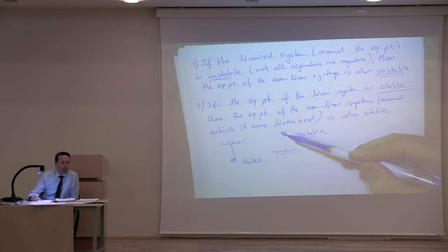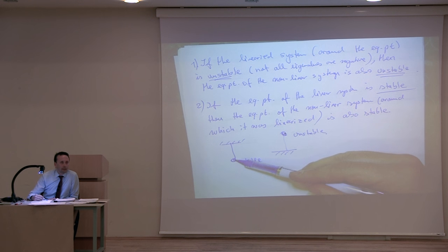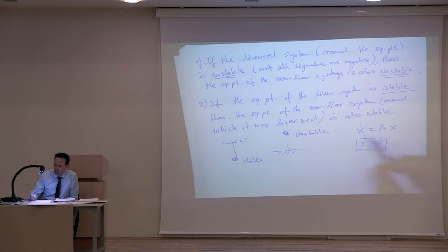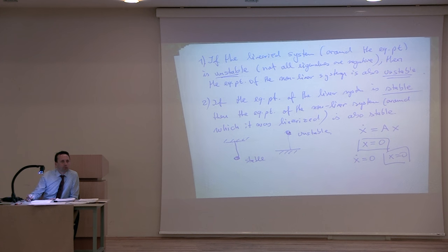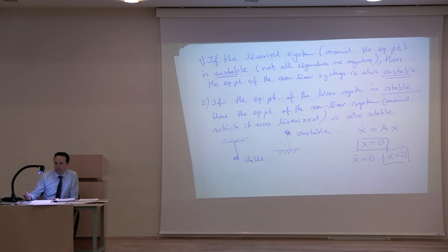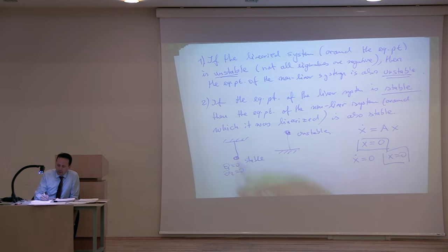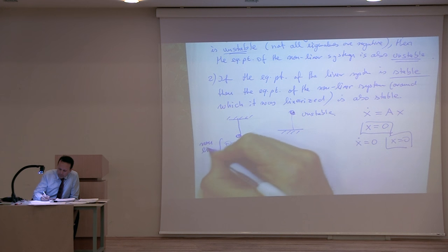Every time you linearize at a different equilibrium point, you get a different linear system. You look at the A matrix of that linear system. Every linear system has its equilibrium where x = 0 — if x-dot = 0, the only solution is x = 0 (assuming A ≠ 0). So x = 0 is always the equilibrium for the linearized system. Here, θ₁ = 0, θ₂ = 0 is the equilibrium for both the linear and nonlinear systems.